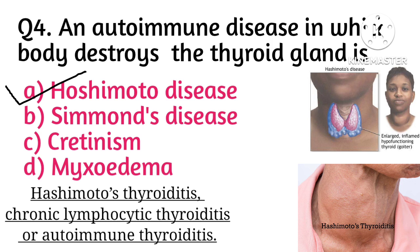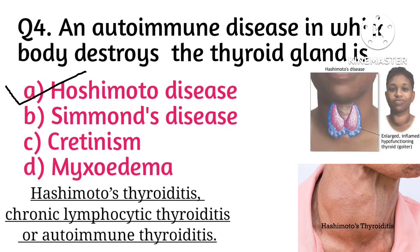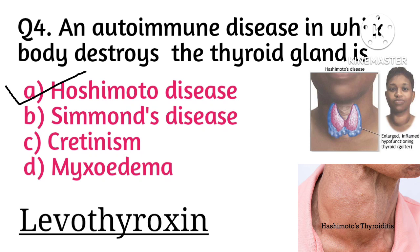Our autoimmune system normally protects our body by attacking bacteria and viruses, but because of this disease our immune system attacks our thyroid gland by mistake. Symptoms of Hashimoto's disease include goiter (enlargement of the thyroid gland), and due to an underactive thyroid: tiredness, muscle weakness, weight gain, depression, and hair and skin changes. Due to an overactive thyroid, symptoms include rapid heart rate, sweating, weight loss, and anxiety.